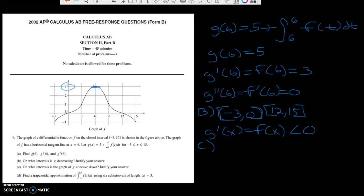So c, it says on what intervals of the graph is g concave down. So now g is basically the position function. f is the derivative, which is velocity. So acceleration is what we need to look for, or f prime.